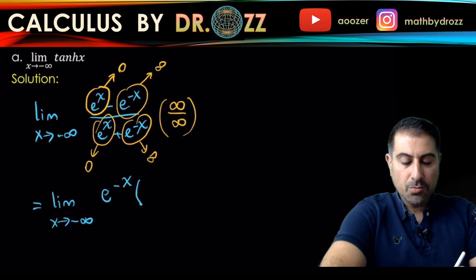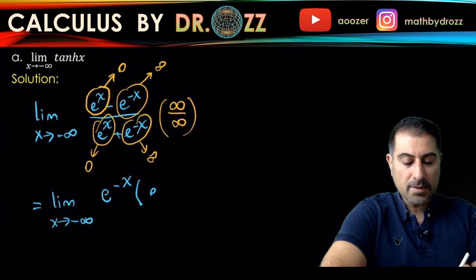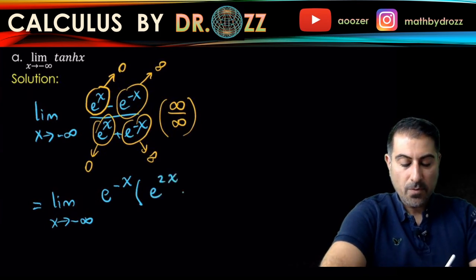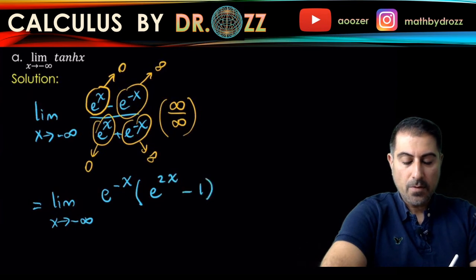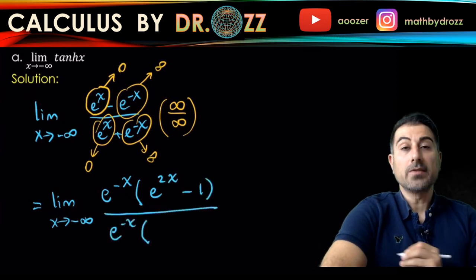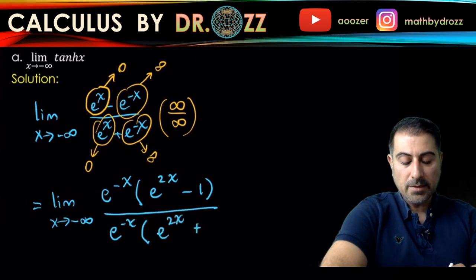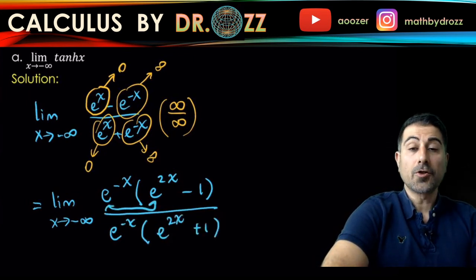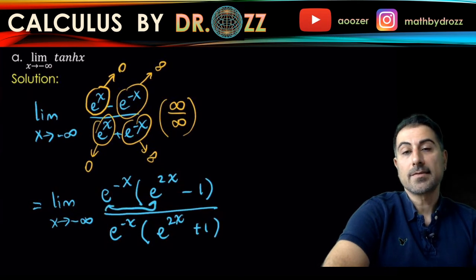So it's going to be e to the 2x minus 1, and in the bottom it's e to the 2x plus 1. When the base is the same, you just add the exponents. That's how you get the first term at the top to be e to the x.